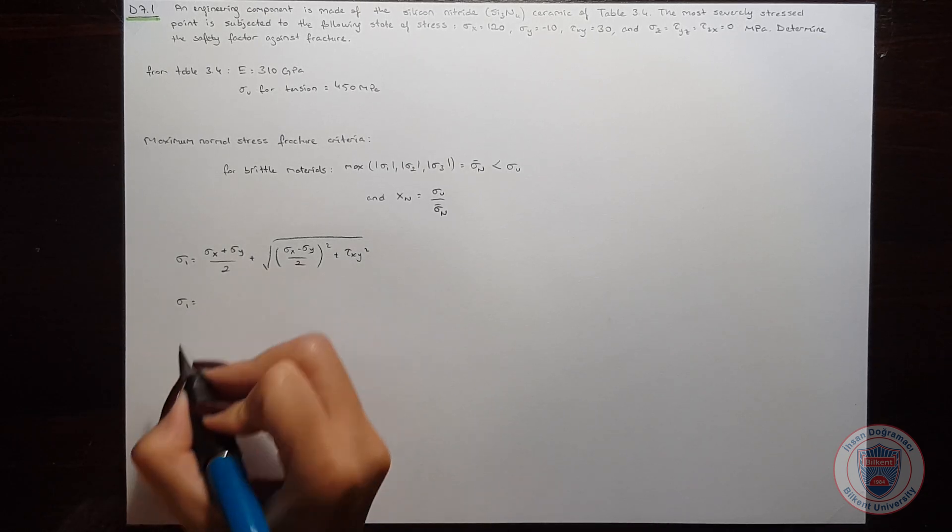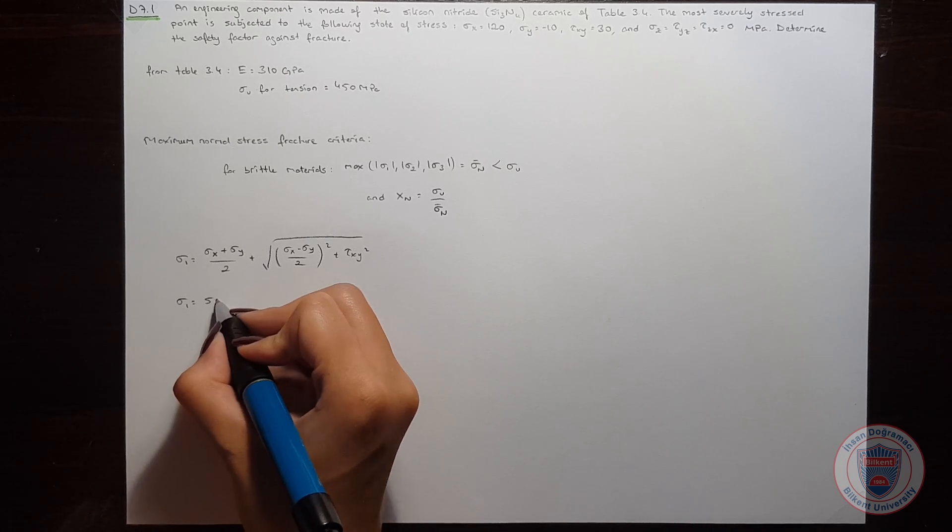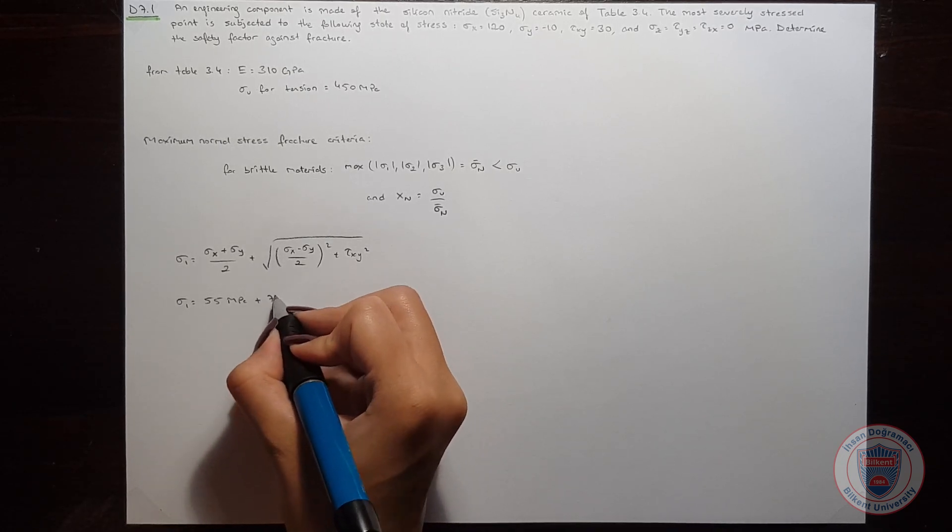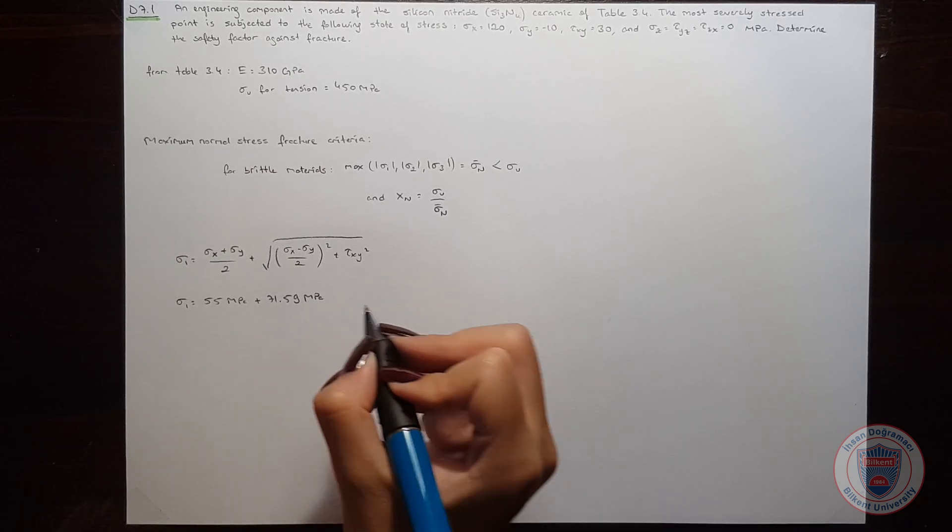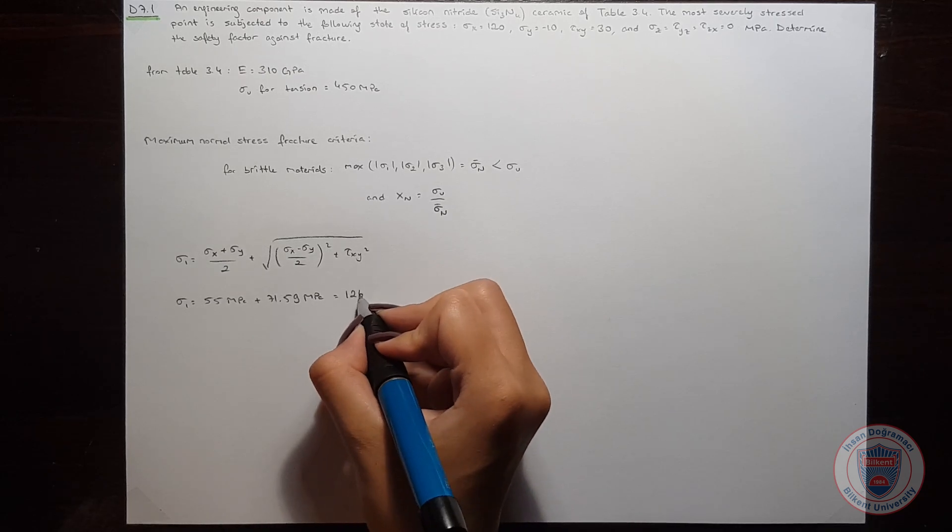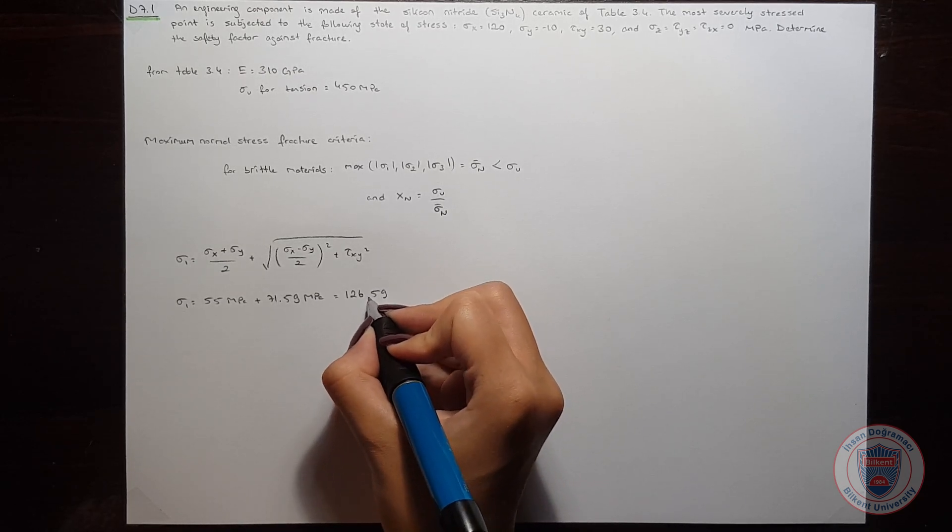Sigma 1 is equal to 55 MPa plus 71.59 MPa, and sigma 1 is equal to 126.59 MPa.